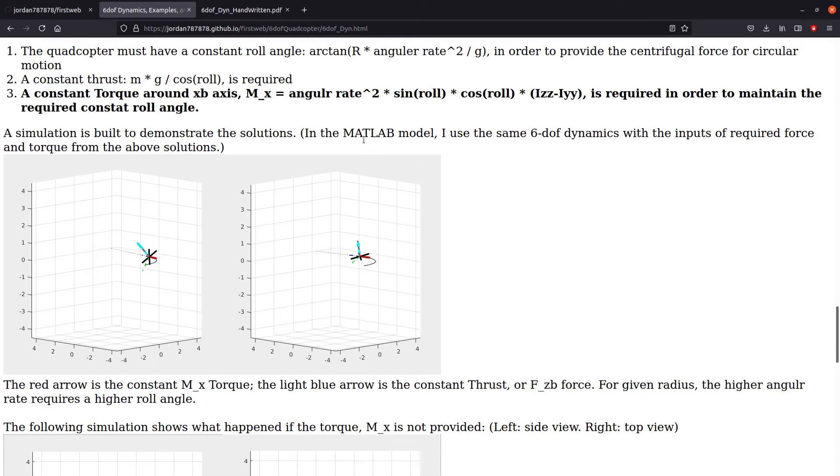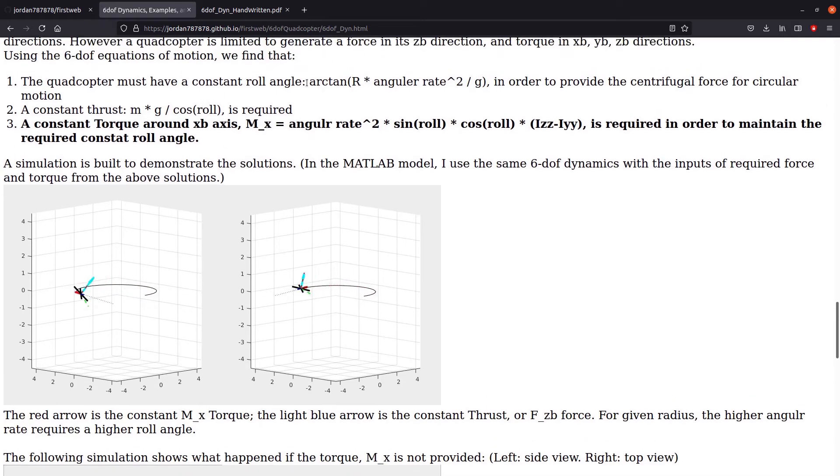A second MATLAB simulation model is also built to demonstrate the quadcopter in circular motion. The left one has a higher angular velocity and the right one has a lower angular velocity. You can see that the roll angle for the left one is much higher than the right one, and you can easily see why from the solution.